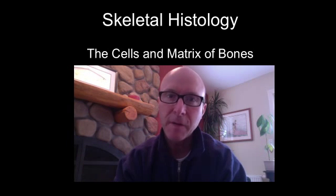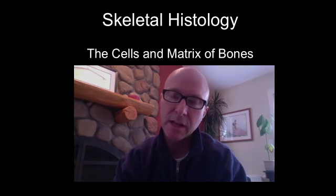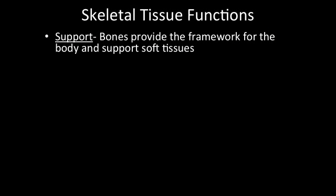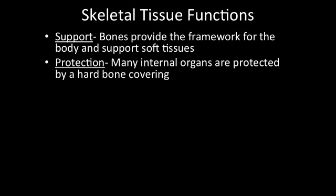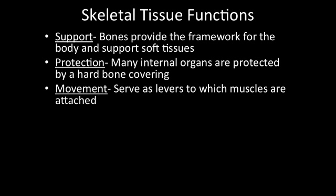Let's start with the five functions of skeletal tissue. The first function is support: bones provide the framework for the body and support the soft tissues. The second is protection: many internal organs are protected by a hard bone covering. Third is movement: especially long bones serve as levers to which muscles are attached and allow us to move.